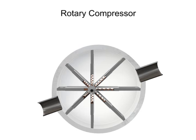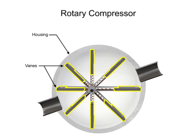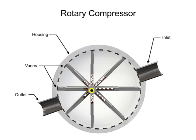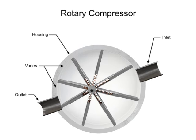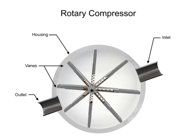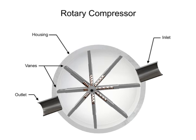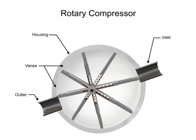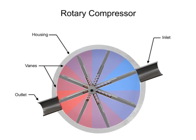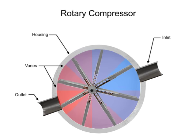Rotary compressors typically consist of a cylindrical housing with adjustable rotary vanes, an inlet, and an outlet. The vanes are on an off-center drive shaft. As the shaft rotates, the vanes slide in and out to maintain contact with the cylindrical compressor wall, creating chambers within the cylinder of varying sizes.